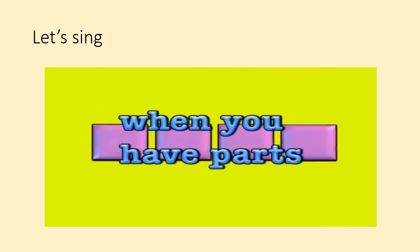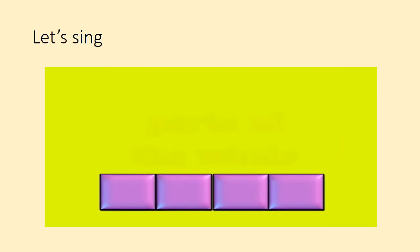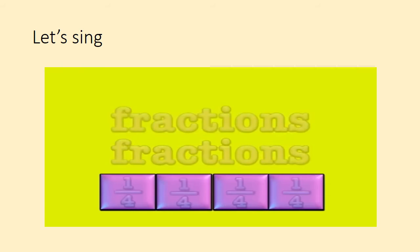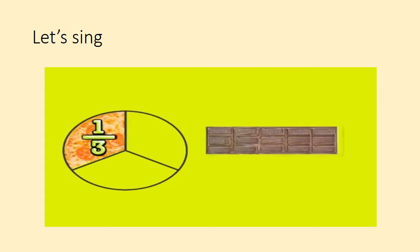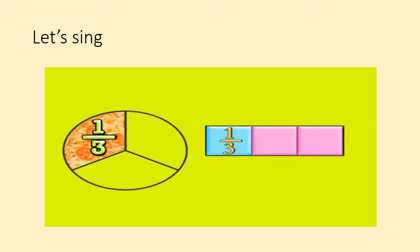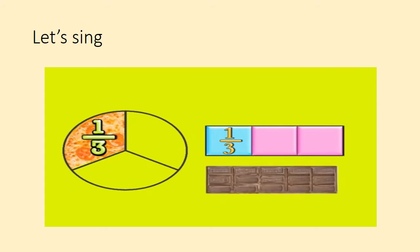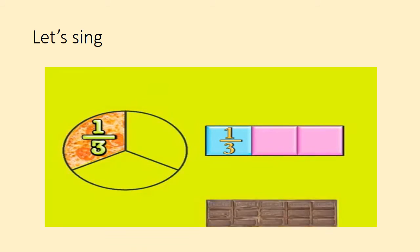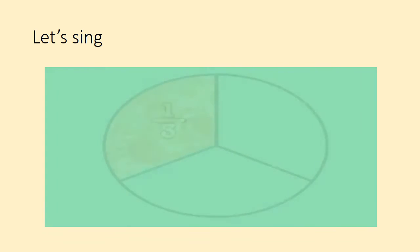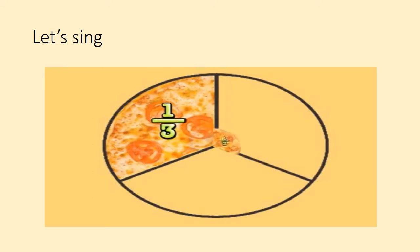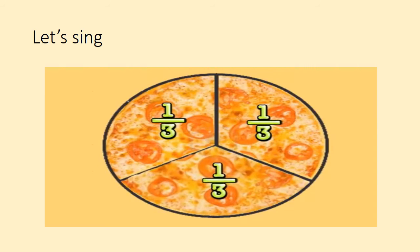When you have parts, parts of the whole. Fractions, fractions, what you need to know. One third of a pie, one third of a bar. Thirds of different things are different sizes by far. But a third is a third, big or small. It takes three thirds to make one whole.